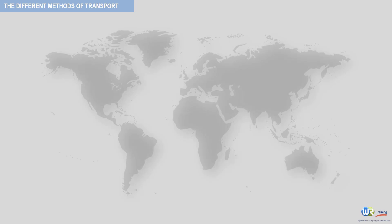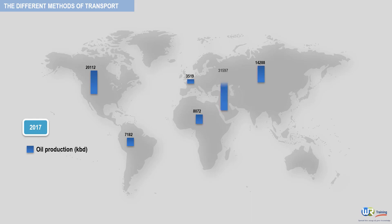To begin our discussion, let's take a look at the following world map. We will use this map to show the location of crude oil production centers and consuming areas. The figures displayed on screen are based on the International Energy Agency 2017 data, expressed in kbd — kilo barrels of oil per day. In blue are the production figures for North America, Latin America, Europe, Africa, Asia, and the Middle East.